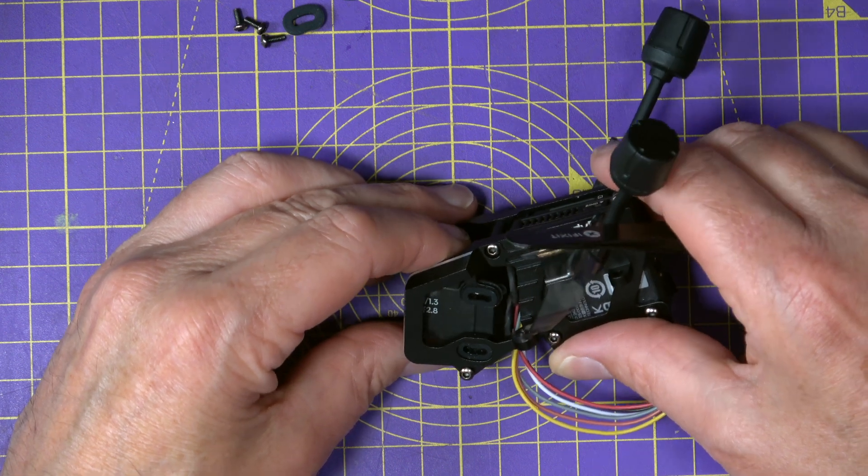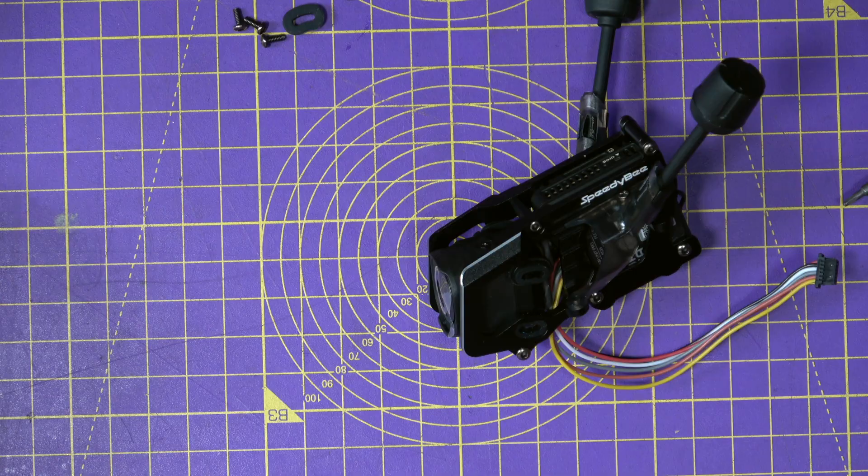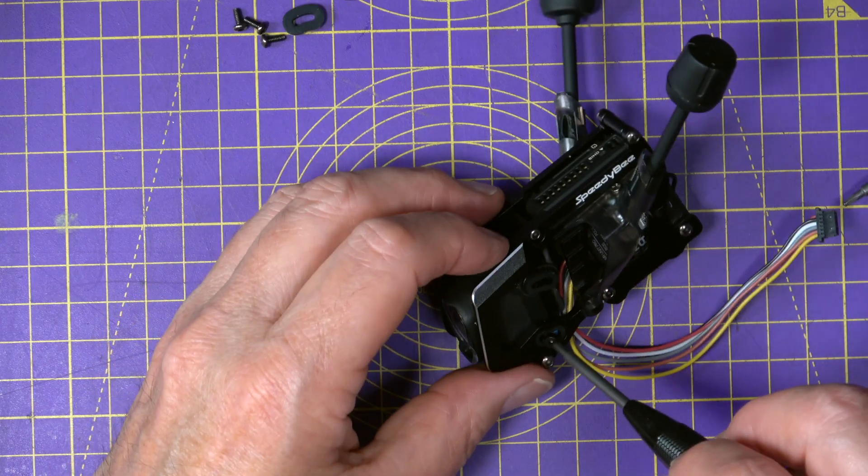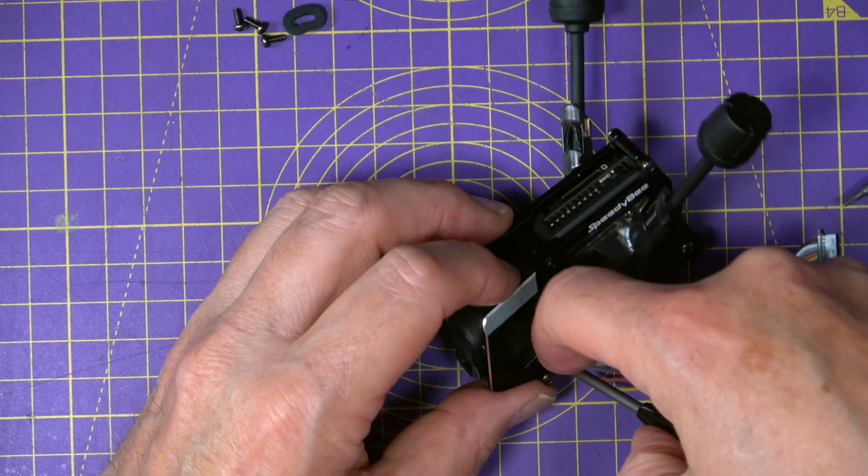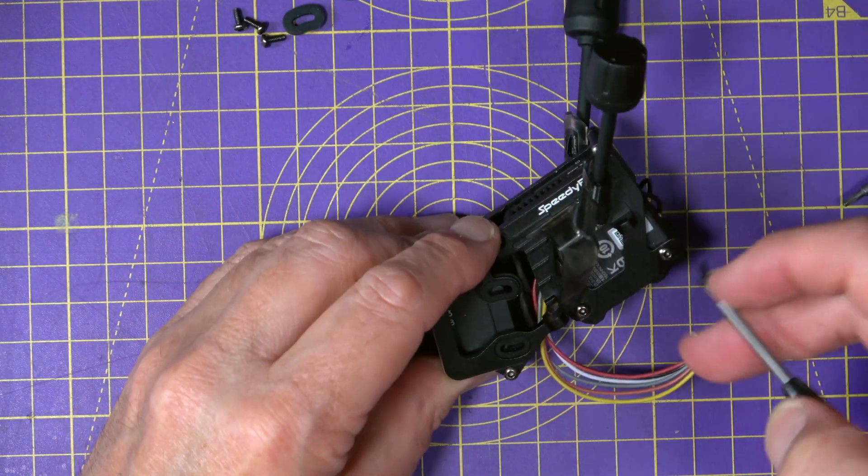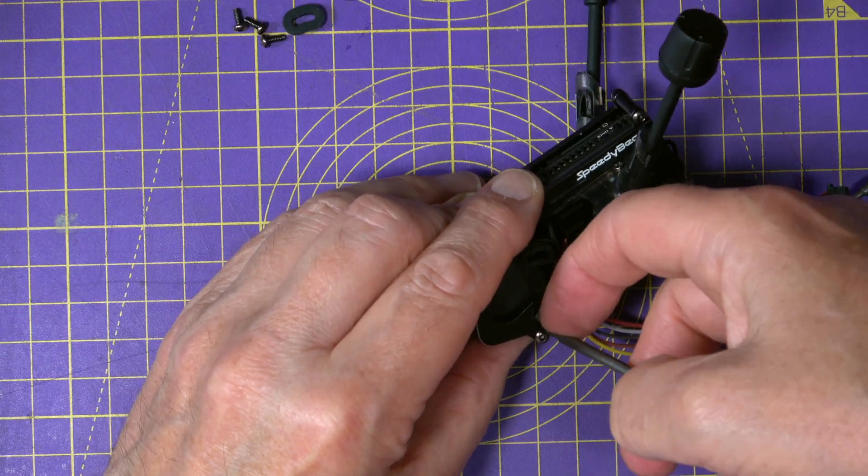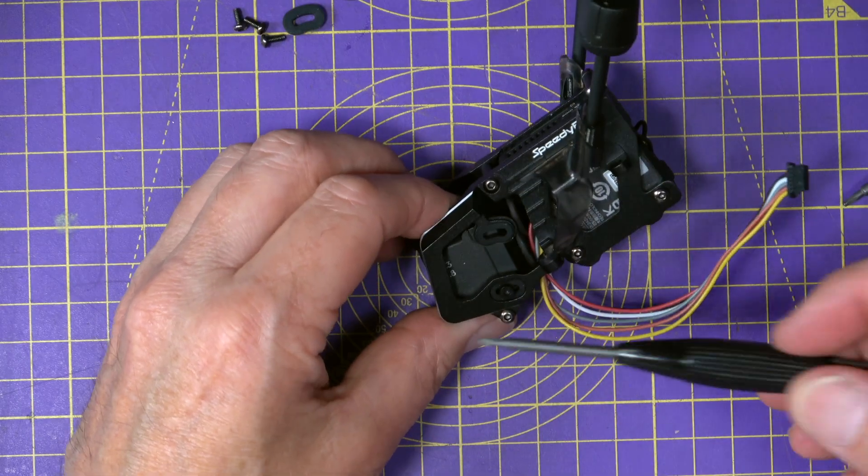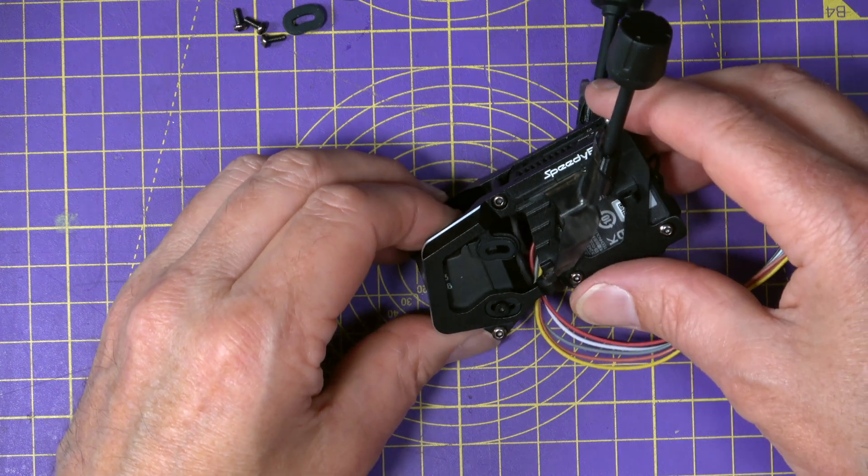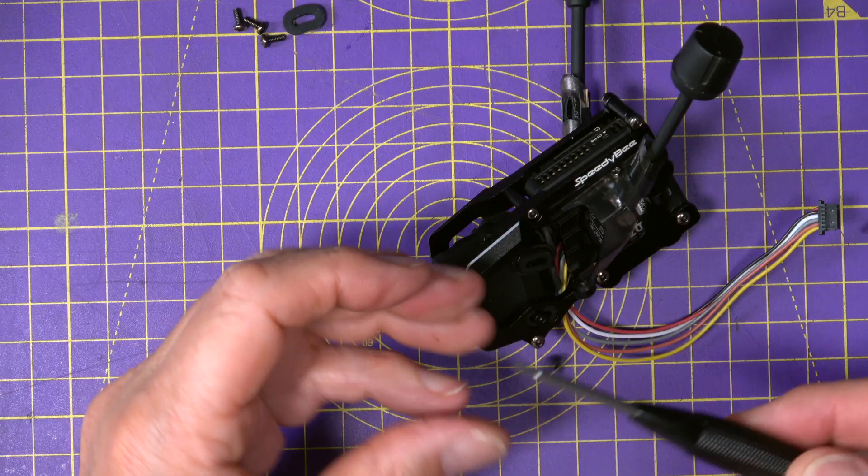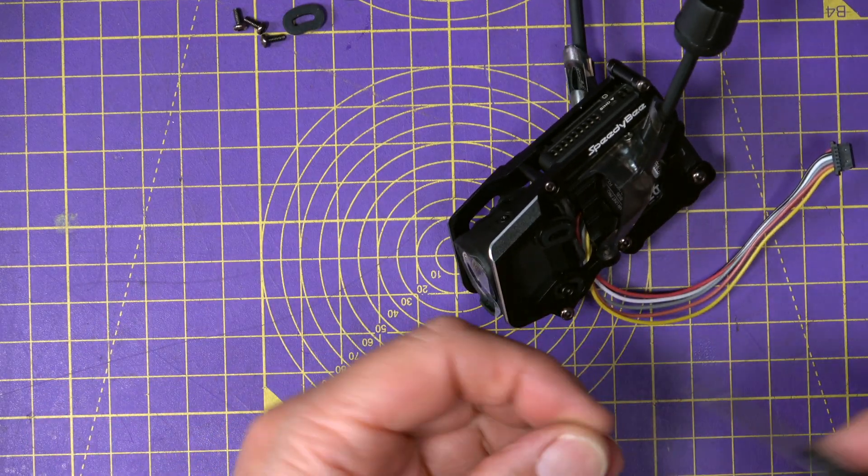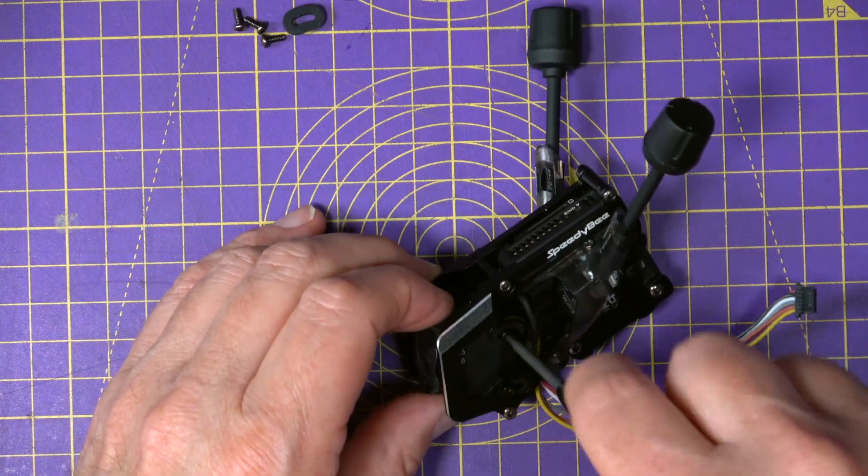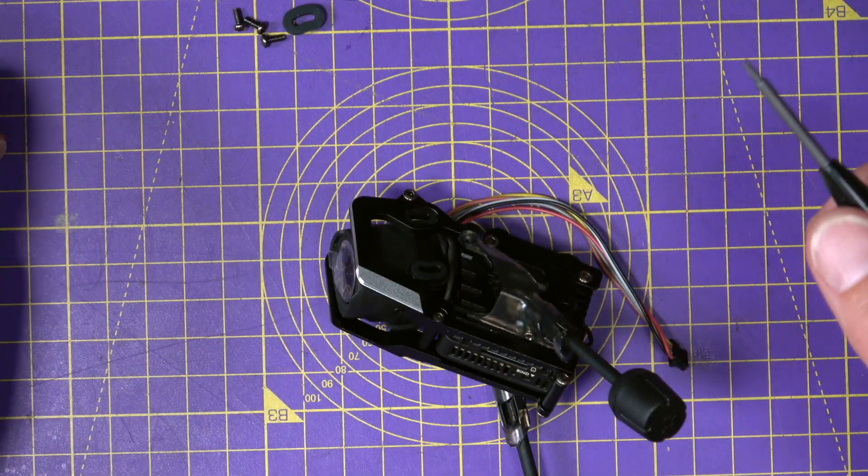There we are, I can see the screw holes now. So, we'll take the original screws that were on the O4 air unit. And just try and get them in the hole. I don't want to do those up tight just yet. In fact, they don't need to be tight at all. Why does that keep falling off there? It's because it's a screwdriver. There we go. Same on this side.